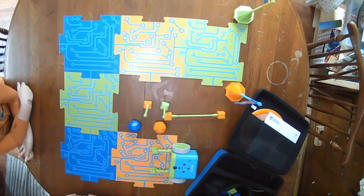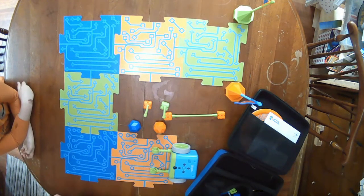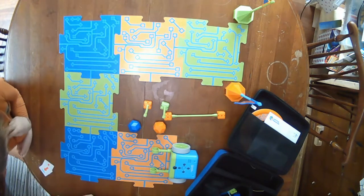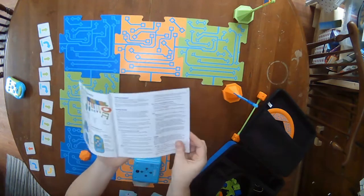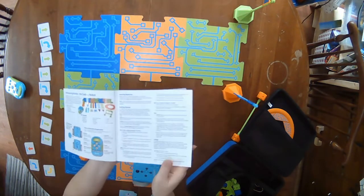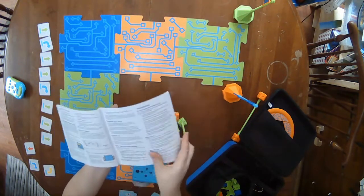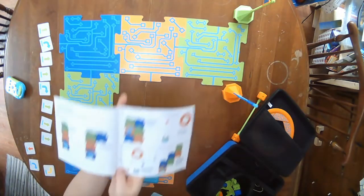Inside the box we have several tools, tiles that match Botly's movements, obstacles for Botly to maneuver around, a detailed instruction manual with several project ideas, and cards to help the littles write their own code.